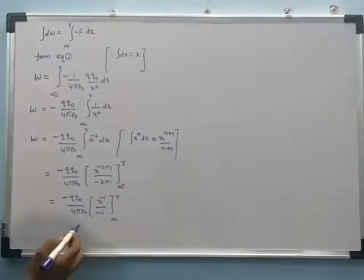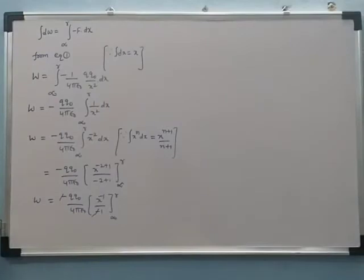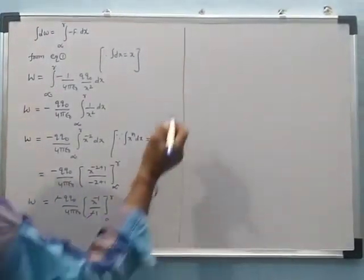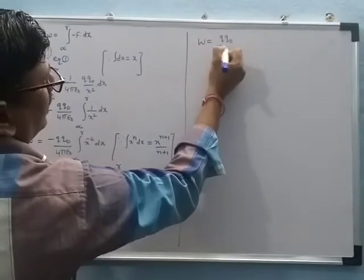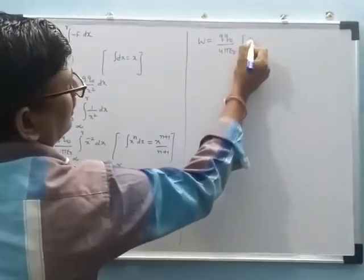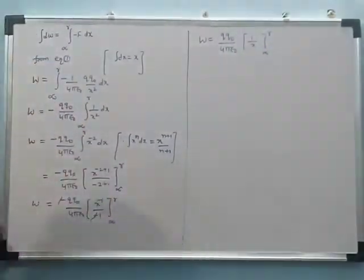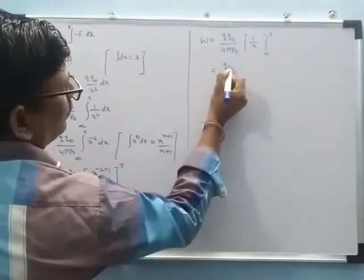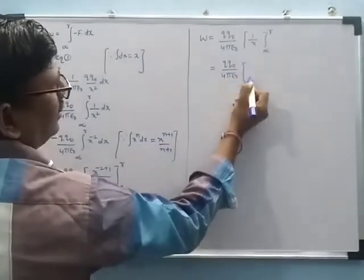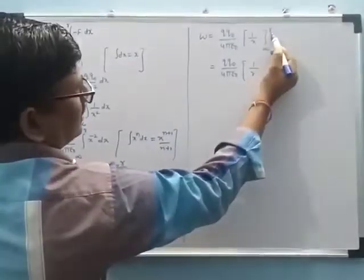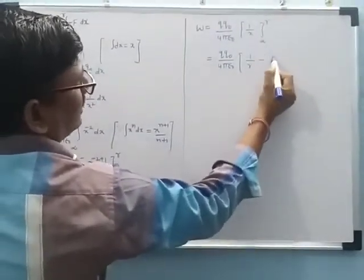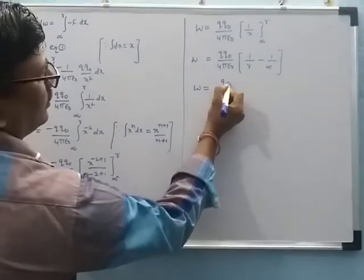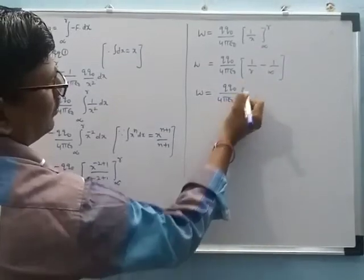The minus and minus cancel out. The −1 in the denominator comes to the numerator making it positive. So W equals (qq₀)/(4πε₀) into (1/x), with limits from infinity to r. Substituting: W equals (qq₀)/(4πε₀) into (1/r − 1/∞). Since 1/∞ equals 0, we get W equals (qq₀)/(4πε₀) times (1/r).